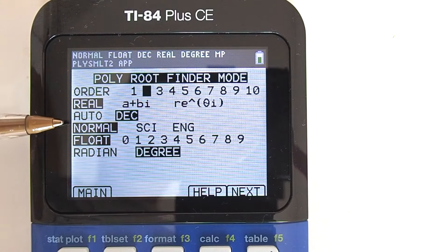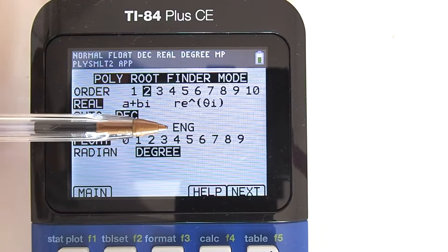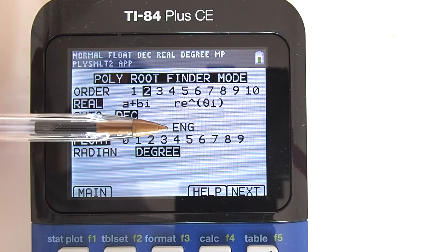The next line down, normal, scientific notation, and engineering notation. Scientific notation is the way of expressing numbers that are too big or too small to be conveniently written in decimal form. For quadratic equations, use normal.